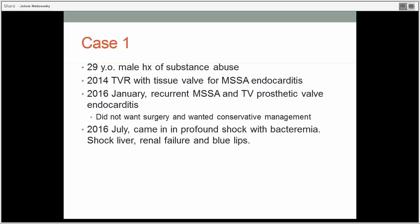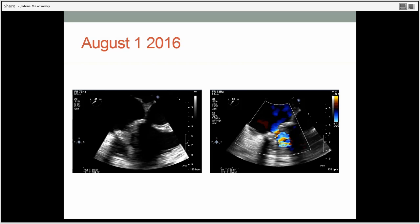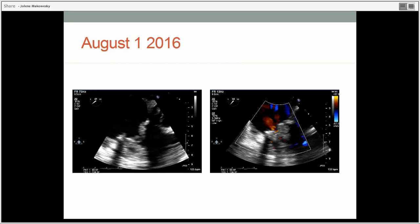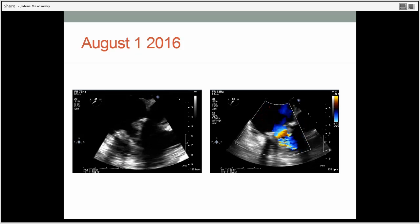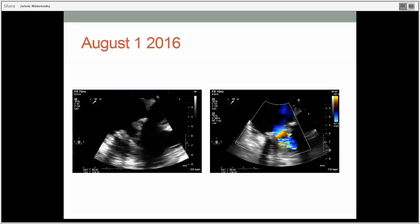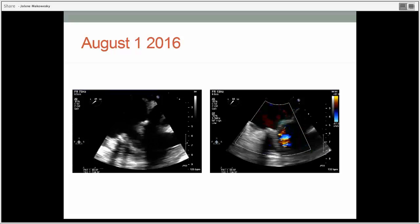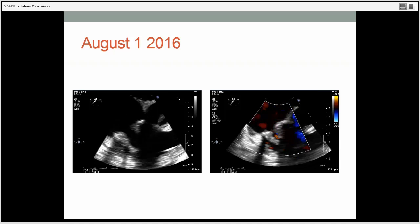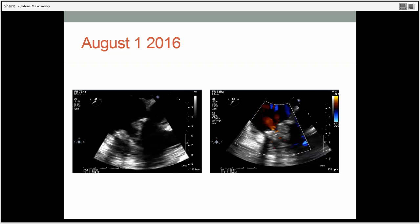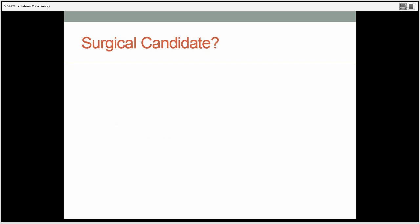At the time, did not want surgery, but I talked to him about an unusual or different approach to him, because people who have prosthetic valve endocarditis is in recurrence, besides the high recidivism, when we put in another prosthetic valve, as many of you guys know, there's a lot of material that's around that has the potential for bacteria to stick to it. What other options might we have to do that? And I had a long conversation with him about that at that time in January. Well, fast forward a few months later, in July, he came out in profound shock with bacteremia, shock liver, renal failure, and blue lips.